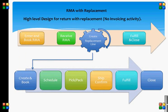This is the high-level design for return with replacement with no invoicing activity. First, enter and book the RMA, then receive the RMA, then create a replacement line, then fulfill and close. For the replacement line created, you can then: create and book, schedule, pick/pack, ship confirm, fulfill, and eventually close.